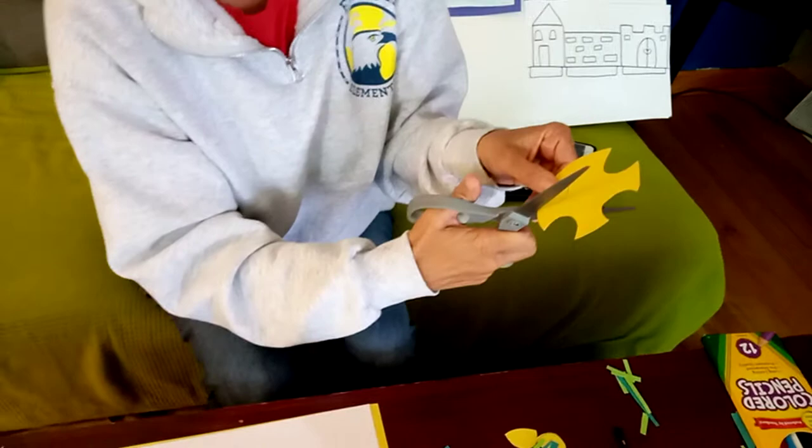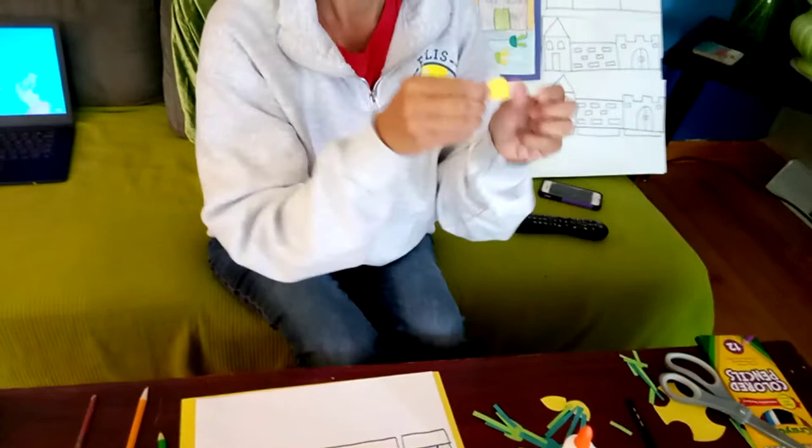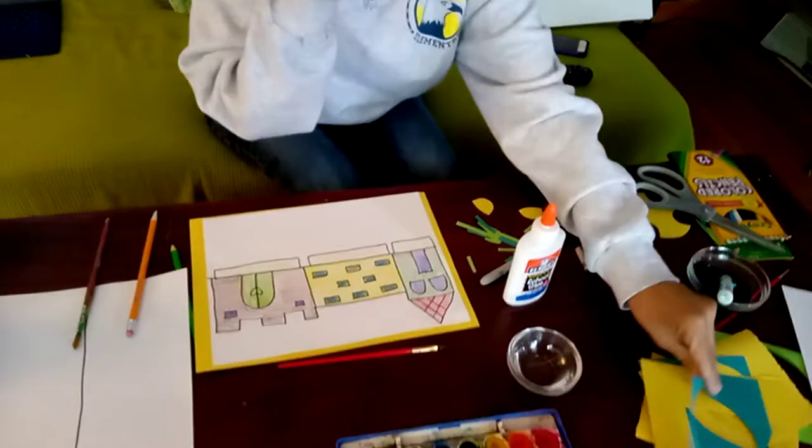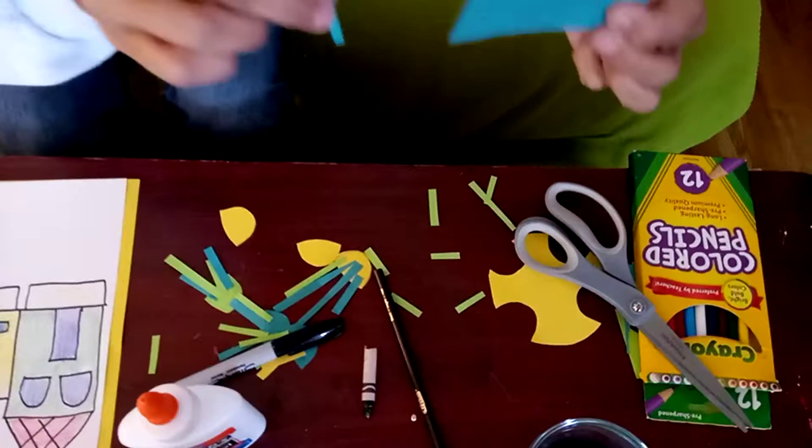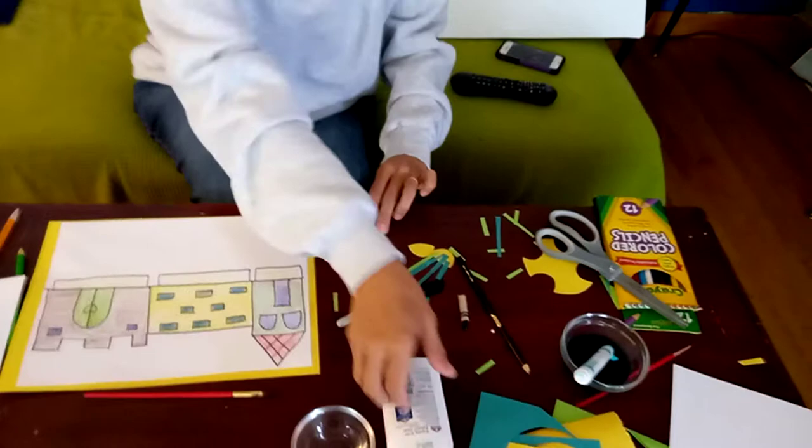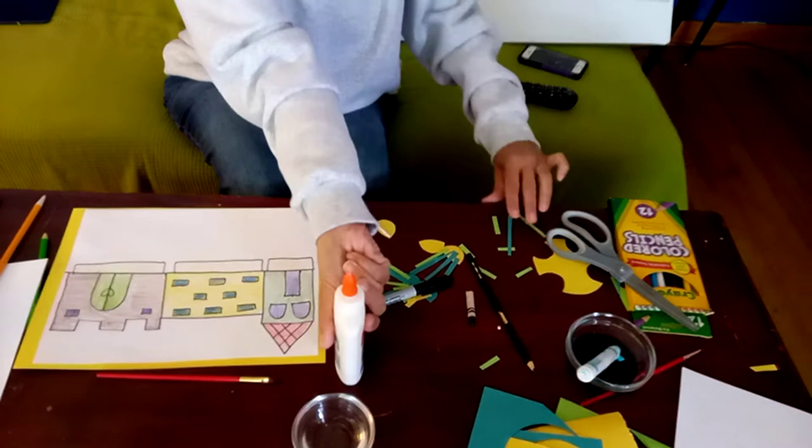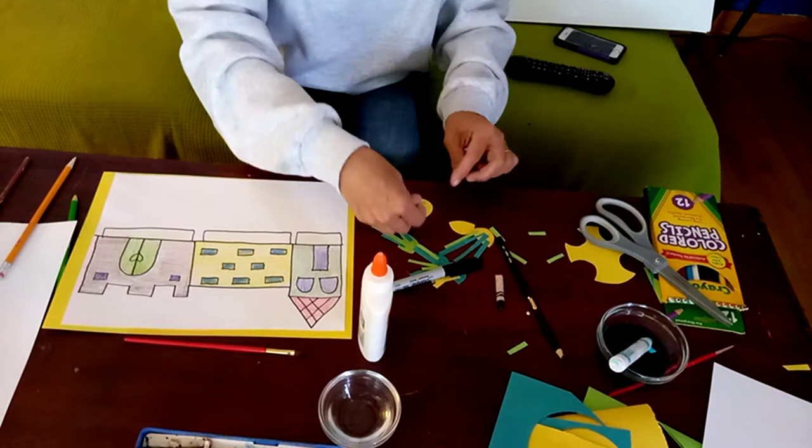Then, we're going to take our other leftover construction paper, and just cut lines out of it, skinny lines, just like this, and those are going to be our legs. And what we're going to do, we're going to open our glue, we're going to put a little line across, and add our jellyfish legs, tentacles, our jellyfish tentacles, we're going to add those in there.